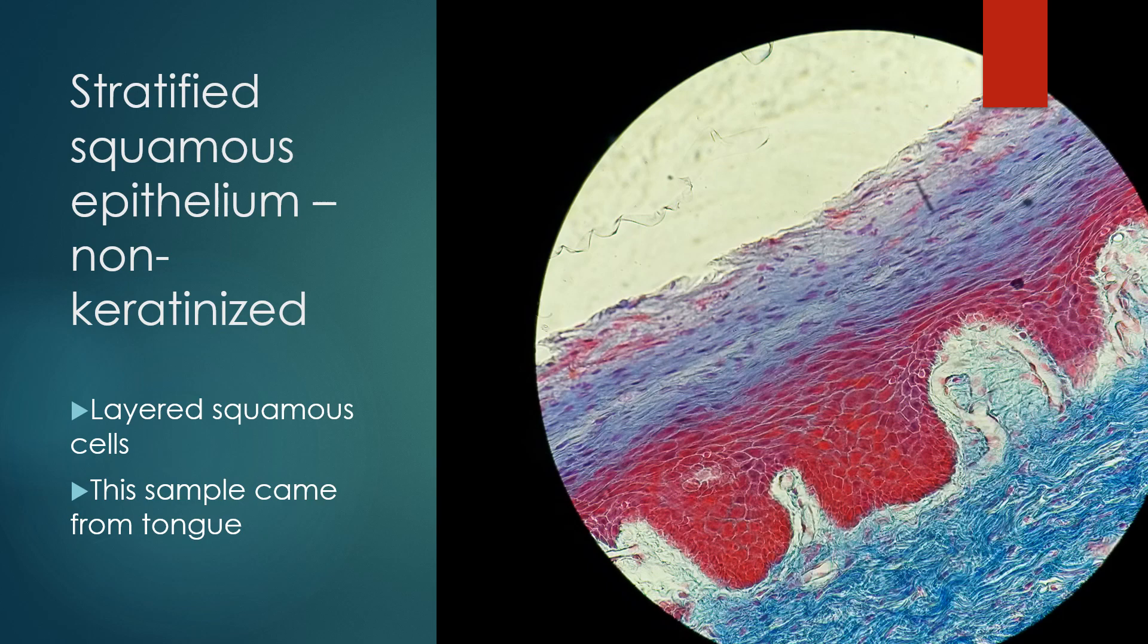Epithelial tissue is always going to be a lining and covering tissue, typically with connective tissue underlying it, because epithelial cells are so closely packed together that there is no infiltration of blood vessels. The cells closest to the connective tissue are the first cells getting nutrients and having waste removal performed by that underlying connective tissue. This down here is the underlying connective tissue.